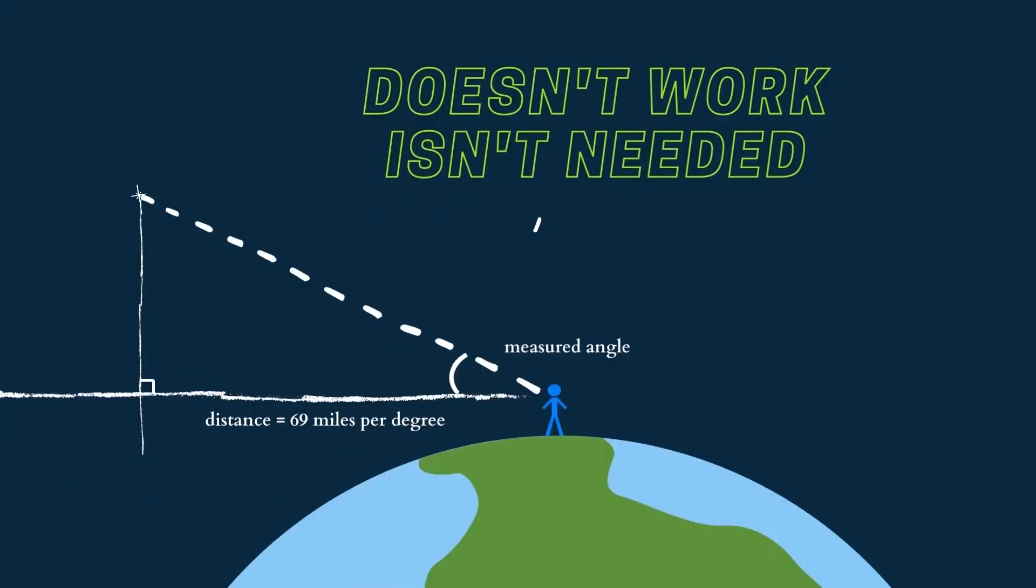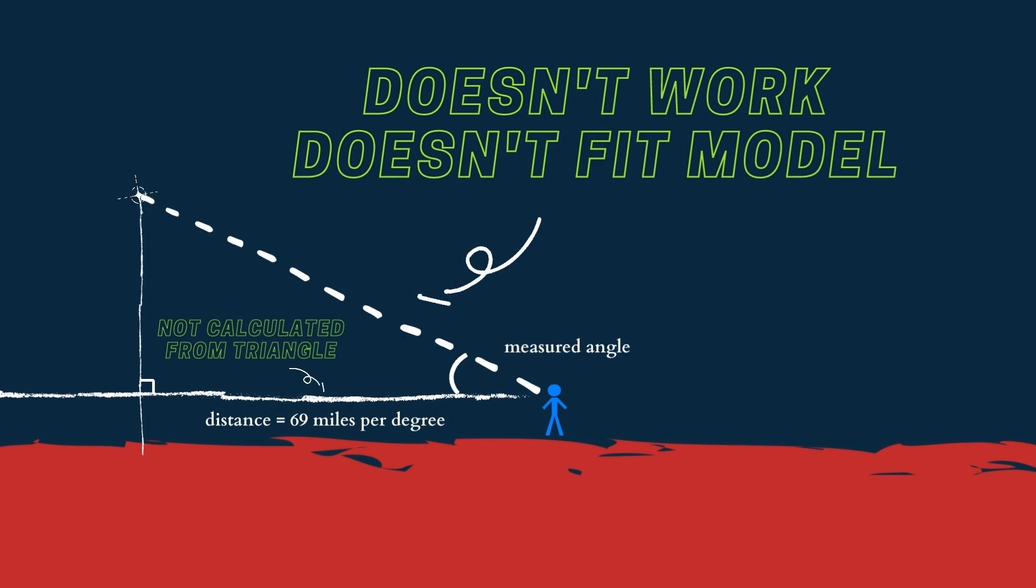No triangles required. So to look back to the flat earth method, it uses 69 miles or 111 kilometers per degree, which we can observe in reality and which can easily be determined from the globe. Flat earthers will heavily use the formula, but completely neglect that it in no way fits their model.